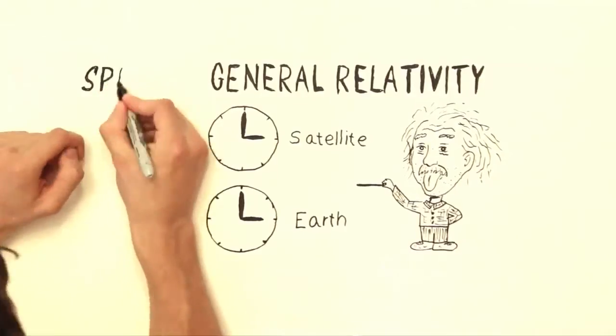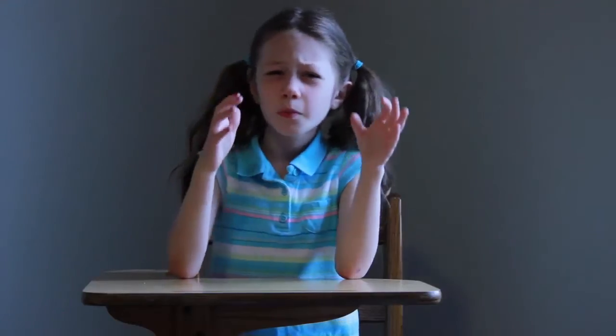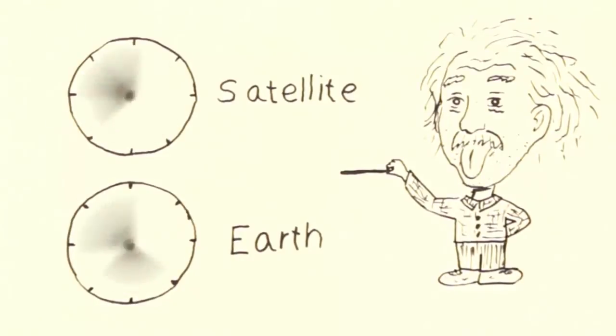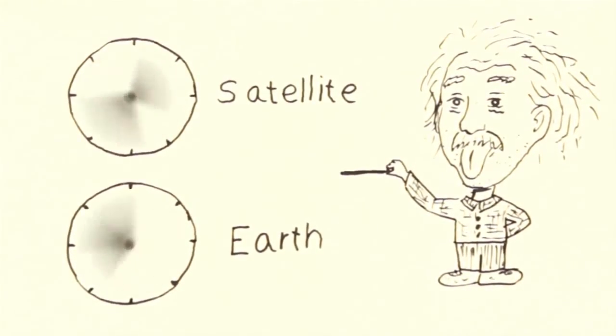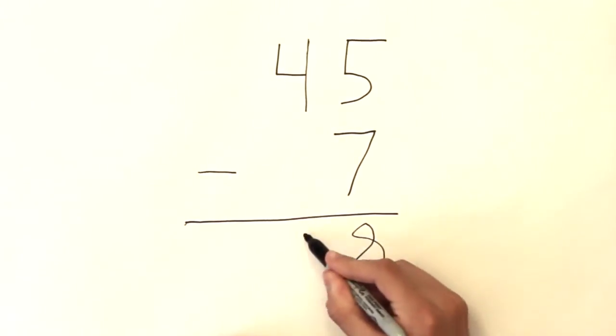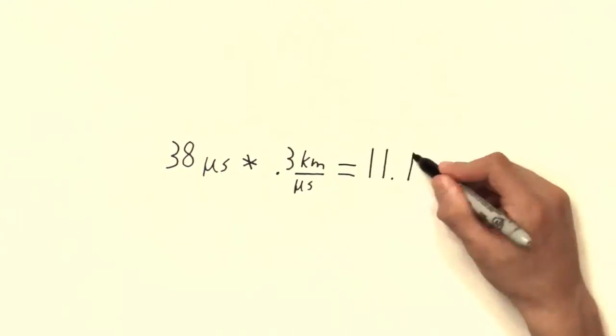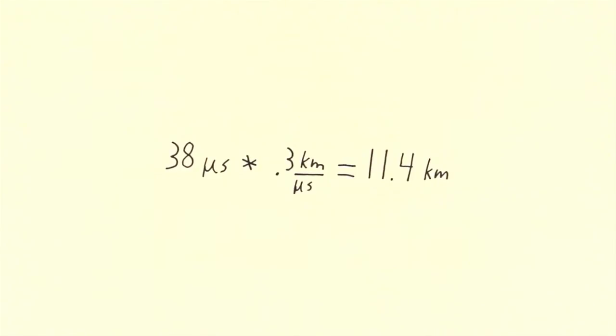But hold on. Einstein's theory of special relativity says that fast-moving clocks tick more slowly. The satellites are moving at about 14,000 kilometers an hour, which would lead to a change of about 7 microseconds slower per day. The net result is 38 microseconds faster. If this wasn't accounted for, the navigation errors would accumulate faster than 10 kilometers per day.